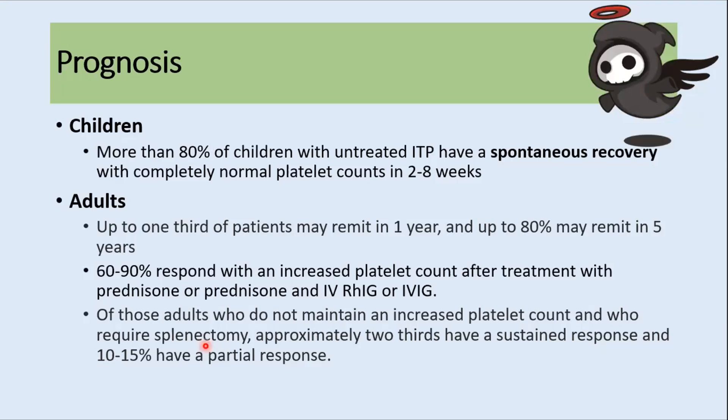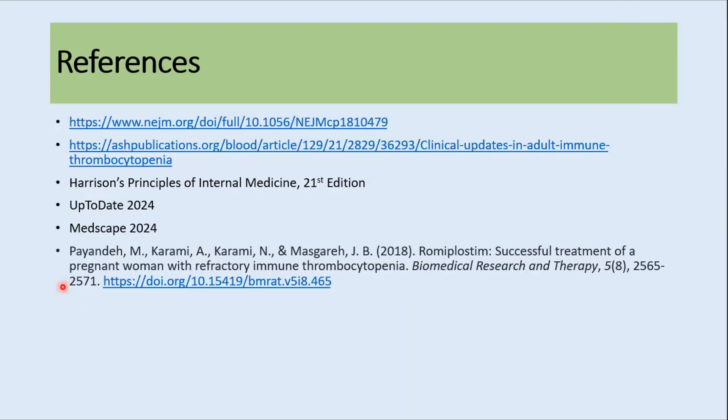Regarding prognosis, in children the prognosis is good — more than 80% of children usually develop spontaneous recovery without any treatment. However, in adults, many tend to develop chronic ITP, although up to one-third of patients may remit within one year and up to 80% may remit within five years.